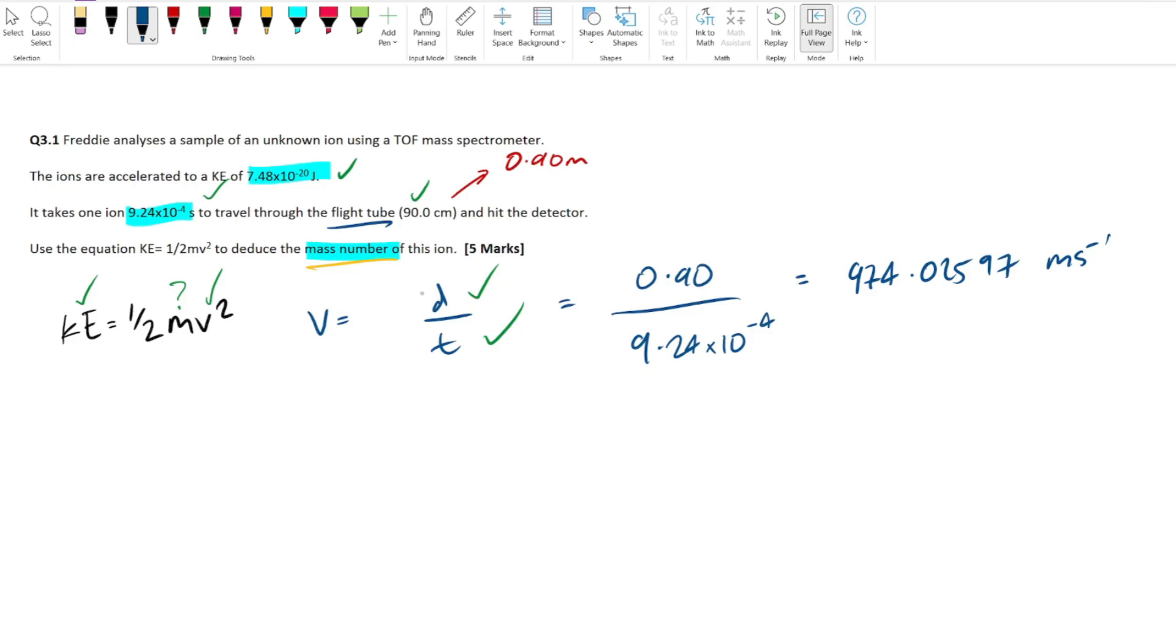We know what the velocity is, so we can rearrange this to make mass the subject. I'll do this step by step. It's going to be mv squared equals 2KE—we times this by 2, times this by 2 to get rid of the half. Next up, we want to divide by v squared just to get rid of it from this side. So m equals 2KE divided by v squared. Now I'm going to backtrack a little bit and say, why did we actually want to do this? Why did we want to make m the subject?